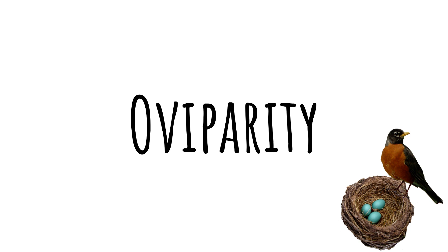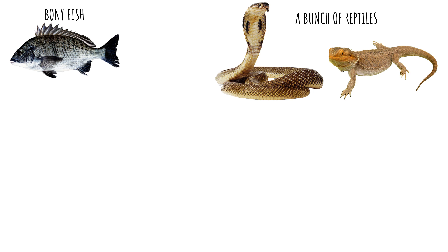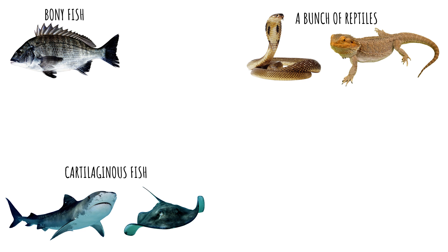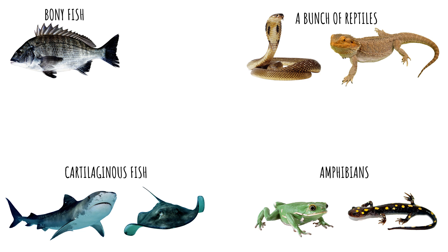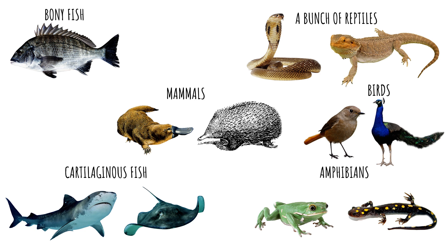In Oviparity, fertilized eggs are laid outside the female's body and develop there, receiving nourishment from the yolk, which is a part of the egg. This occurs in most bony fish, many reptiles, some cartilaginous fish — meaning fish that have a skeleton made of cartilage rather than bone, such as sharks and stingrays — most amphibians, two mammals which reside in Australia, and all birds.